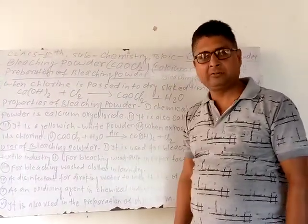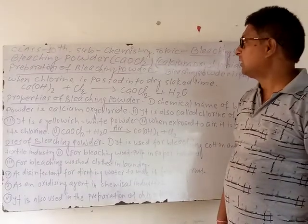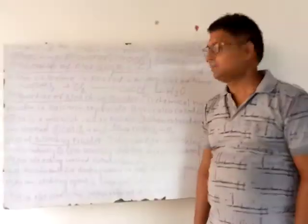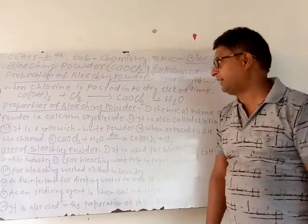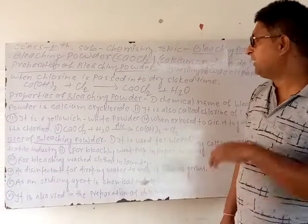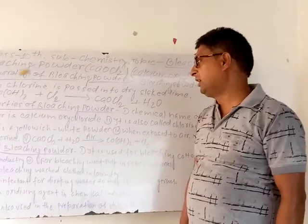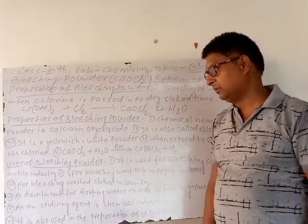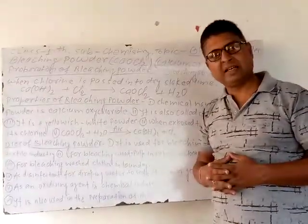Students, please take a pen and copy the following questions: A) What is the common name of Calcium Oxychloride? B) What is the chemical formula of Calcium Oxychloride? C) Explain the preparation of Bleaching Powder. D) What are the properties of Bleaching Powder? E) What are the uses of Bleaching Powder? Solve these and get them checked.